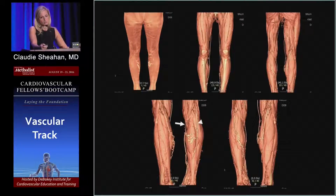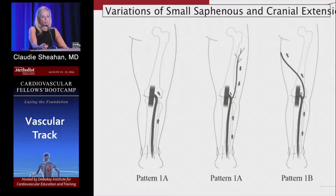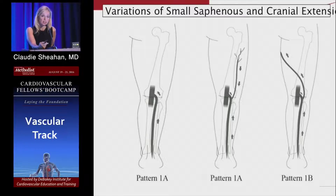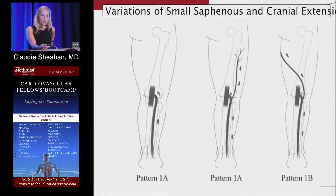There are also intersaphenous veins — branches in the thigh and leg where the GSV and SSV communicate. Reflux in either the GSV or the SSV can lead to varicosity depending on the source, and sometimes it can be both. Another variation worth noting is a cranial extension of the small saphenous vein, which can terminate in muscular branches with flow directed down into the popliteal vein. Another version of this cranial extension is the Giacomini vein, where it wraps around and joins the GSV — one connection between the SSV and GSV.